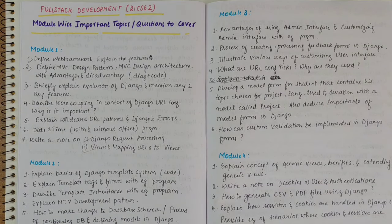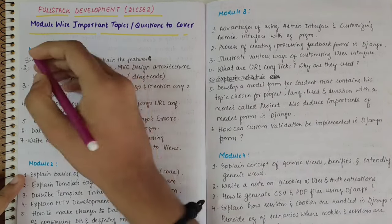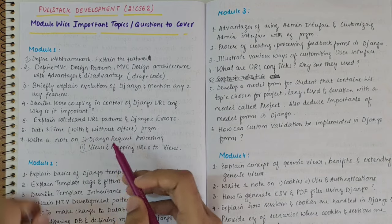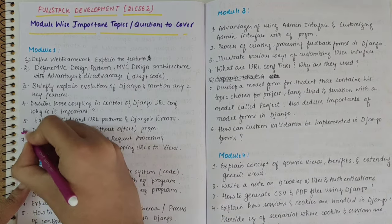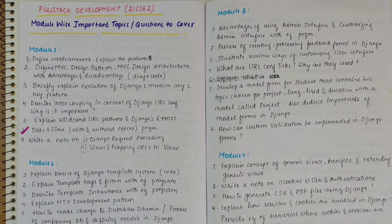In first module, we have one standard program to study. This will be asked, that is the date and time with and without offset program. So this is a must program, will get it for 10 marks.